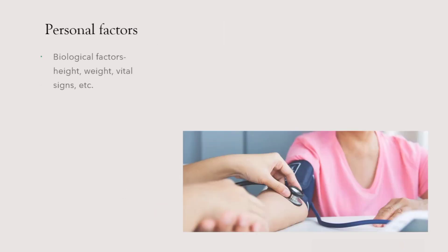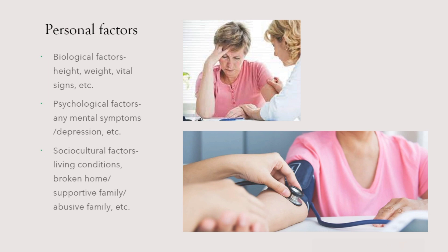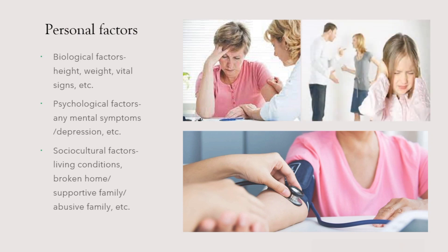Next, we assess personal factors. First, biological factors — the biological parameters related to health conditions, like height, weight, vital signs, etc. Then comes psychological factors — whether she has any mental symptoms, is she in depression, does she have a positive self-image, etc. And the last one is socio-cultural — what are the conditions in which she lives, does she belong to a broken home, is her family supportive or abusive, etc. These all are our assessment.